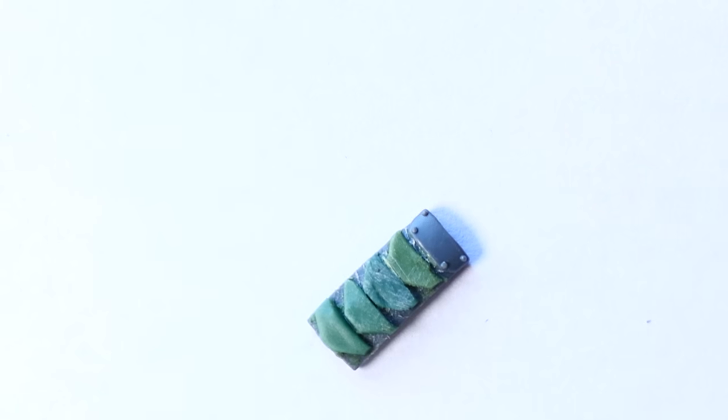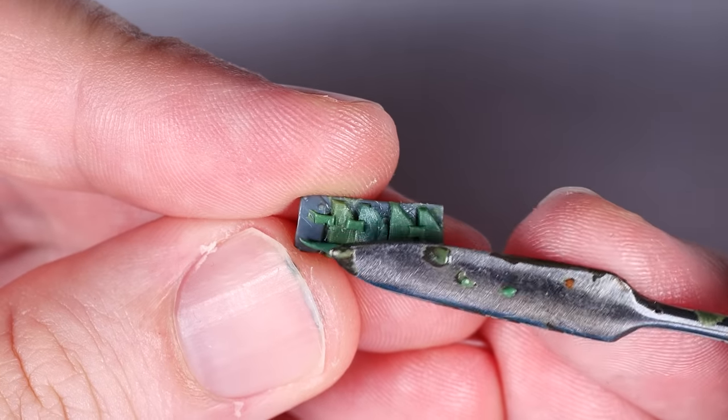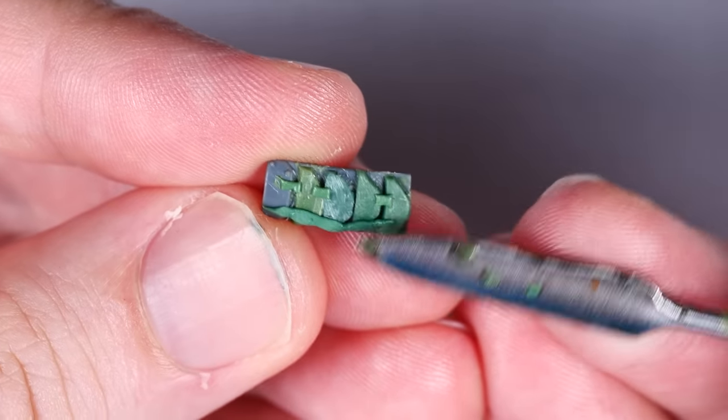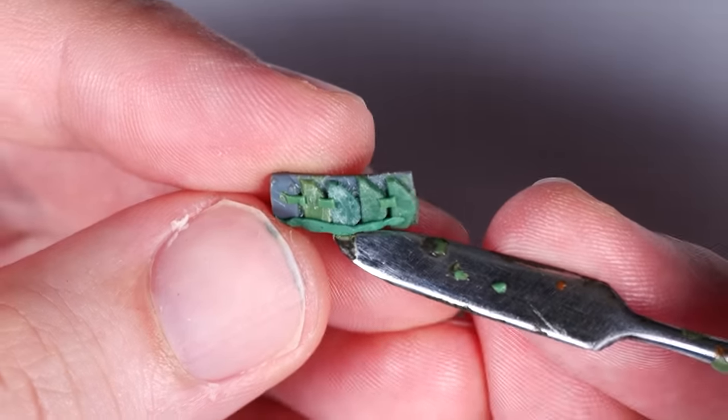Once all four segments are done, I lightly sand them down to ensure they're all flat and roughly the same thickness, and then I move onto the small connector pieces between the plates. This part is definitely not needed, but I did it on my first squad of five already, so might as well keep doing it for continuity's sake.